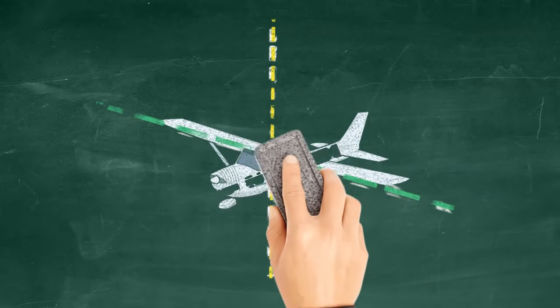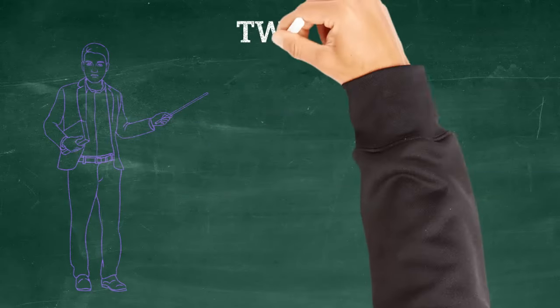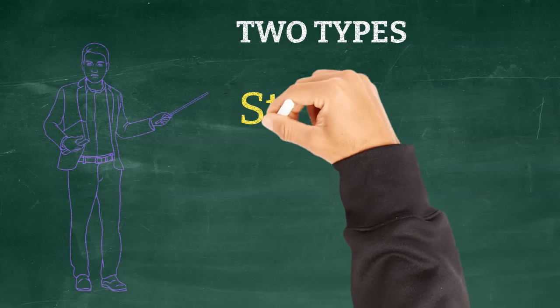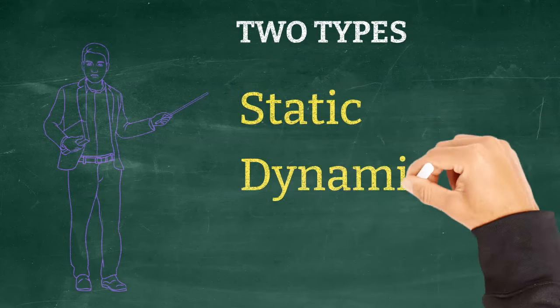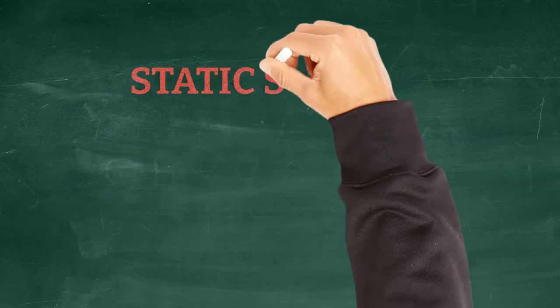When it comes to stability, all three axes are considered. Do you remember what those are from the last lesson? Let's talk about two types of stability that affect our three axes: static and dynamic.